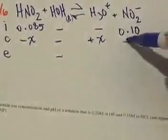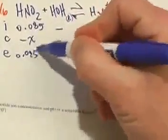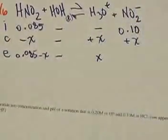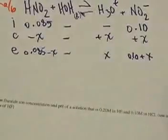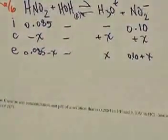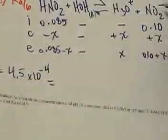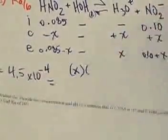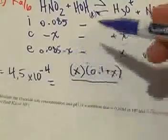For the change row: HNO2 loses X, H3O+ gains X, and NO2- gains X. So at equilibrium: HNO2 = 0.085 - X, H3O+ = X, and NO2- = 0.1 + X. Now we write the equilibrium constant expression. The Ka is 4.5 × 10⁻⁴, which equals X times (0.1 + X) divided by (0.085 - X).